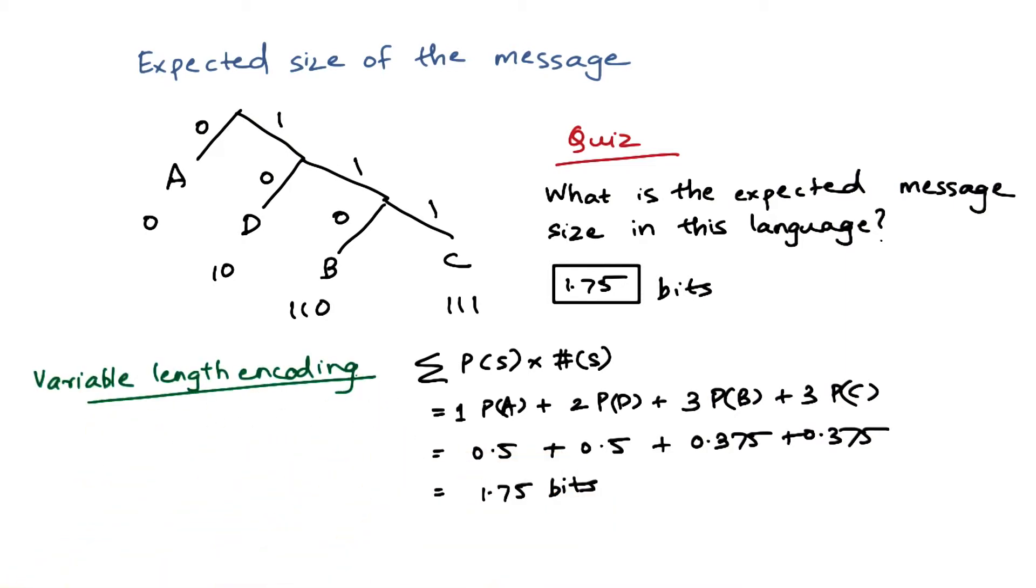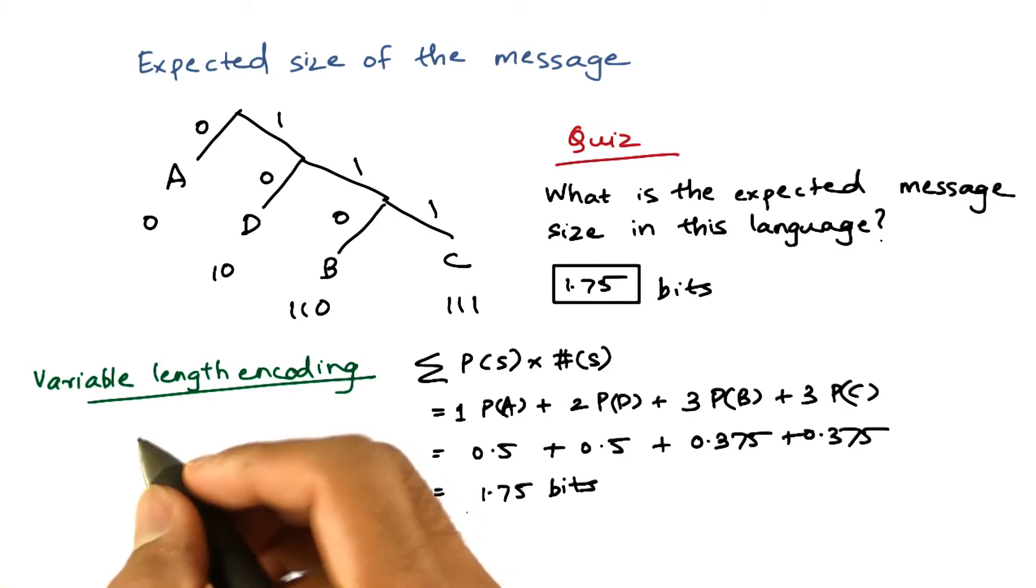This is also called variable length encoding. This should give you some idea into figuring out why some symbols in Morse code are smaller than others. In the English alphabet, the letters E and T occur most frequently.